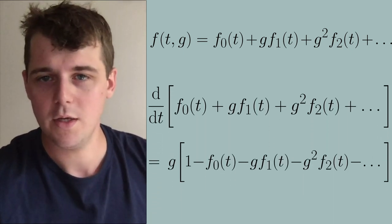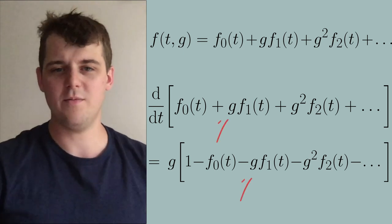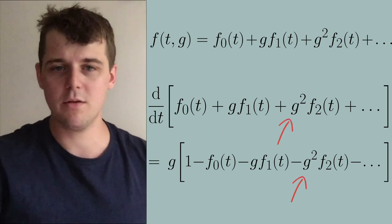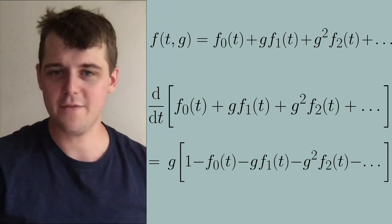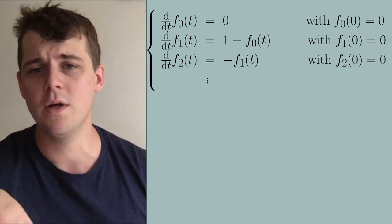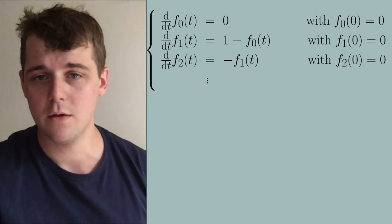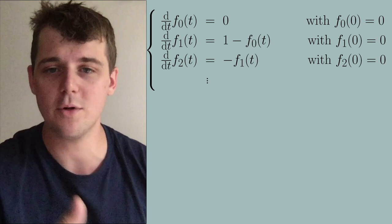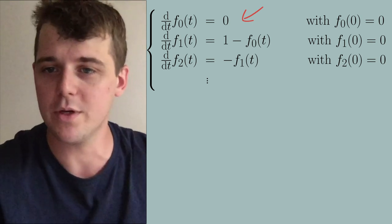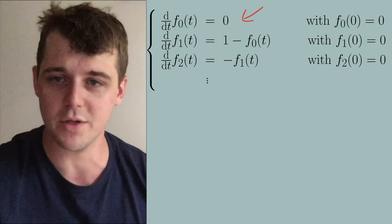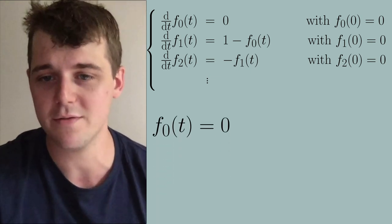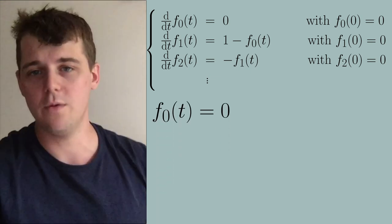When we plug this into our original differential equation, we find various powers of g on each side of the equation. By comparing each power of g on the left and right hand sides, we can write out a bunch of decoupled differential equations. For example, the time derivative of f0 is equal to zero. Since the initial condition has no g dependence, f0 starts at zero, and it's easy to see that f0 equals zero for all times.